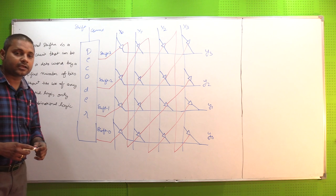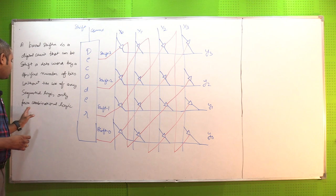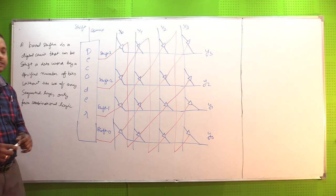If we look at a basic barrel shifter, I have written, the barrel shifter is a digital circuit that can shift a data word by a specified number of bits without the use of any sequential logic, only pure combinational logic.